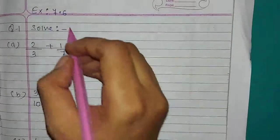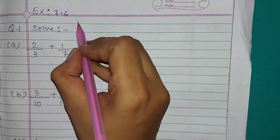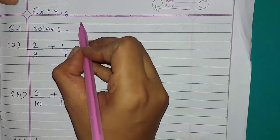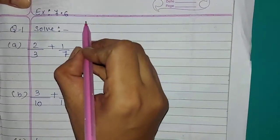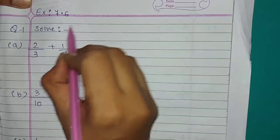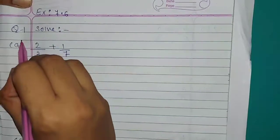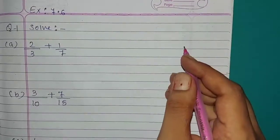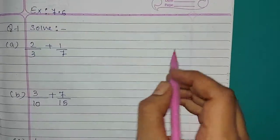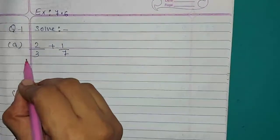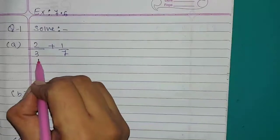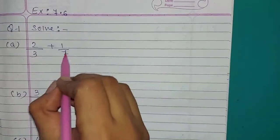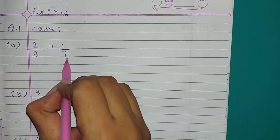Hello students, let us solve examples of exercise 7.6. Question number 1, solve A: 2 upon 3 plus 1 upon 7.